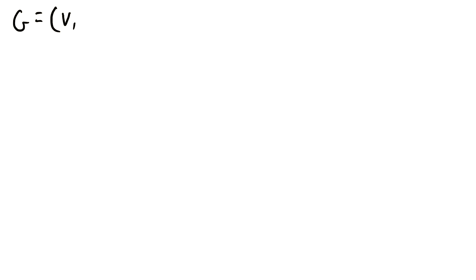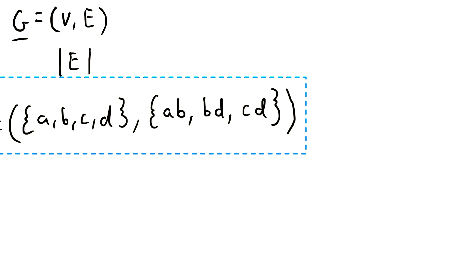Now we know a graph, as we've said before, is an ordered pair with some vertex set V and some edge set we'll call E. Then the size of the graph G is simply the cardinality of the edge set — that's the number of elements in the edge set, or the number of edges in the graph. Those are all the same thing.